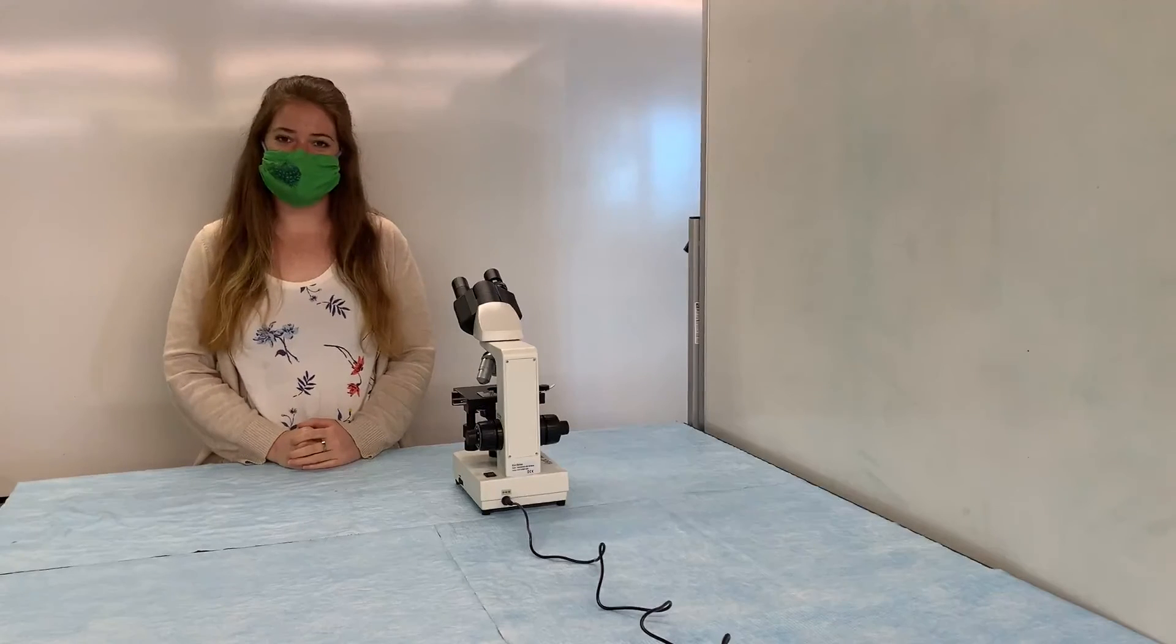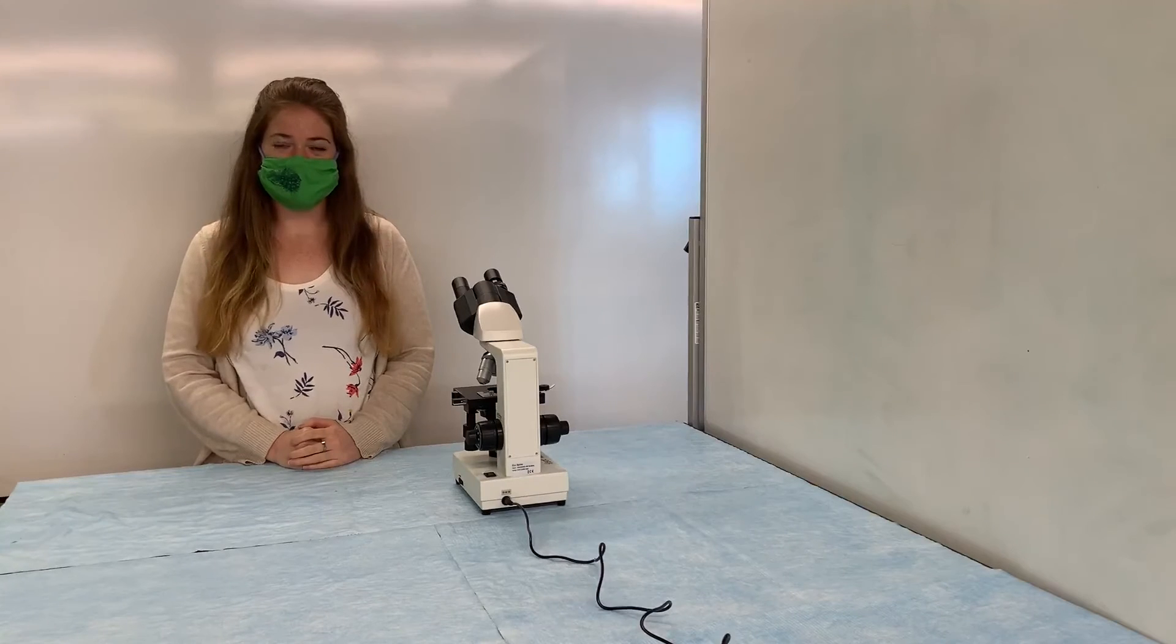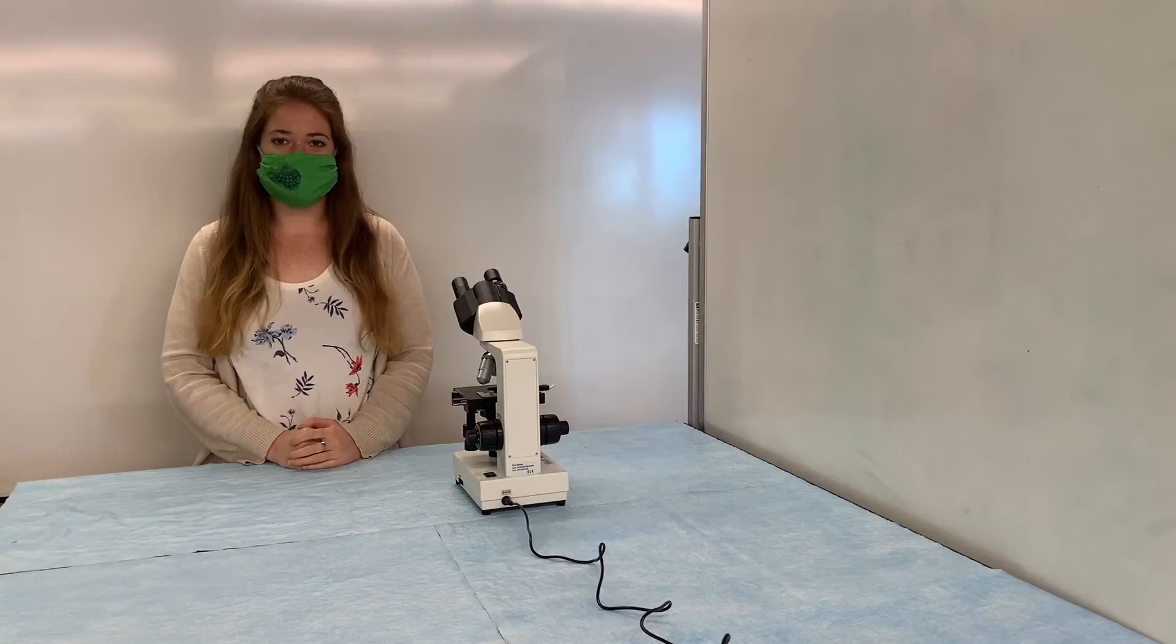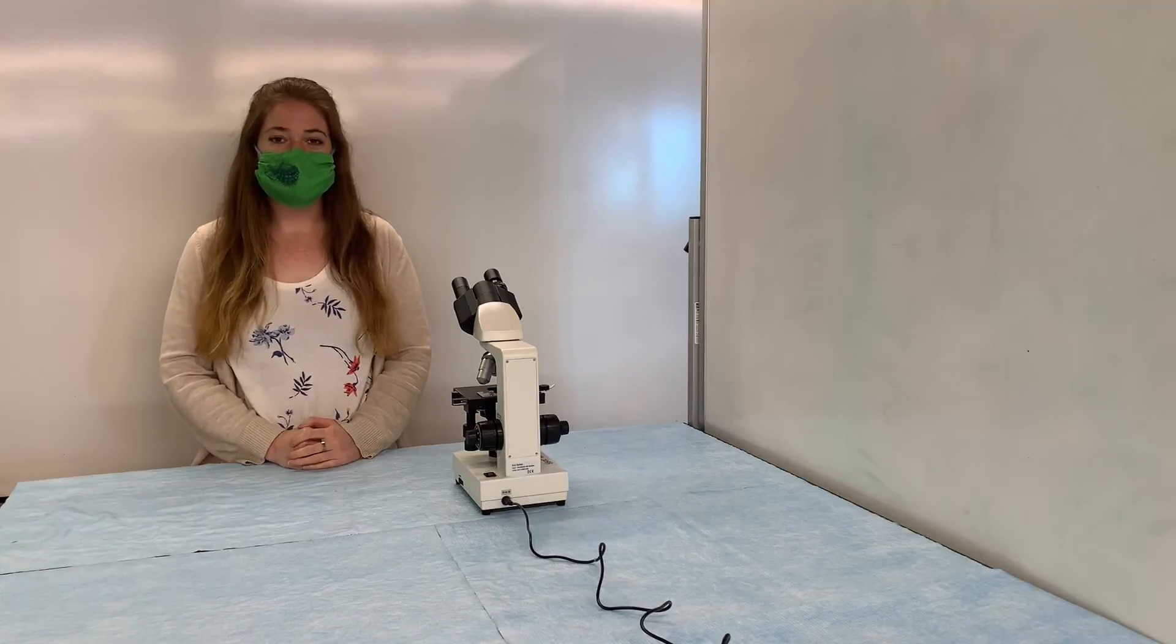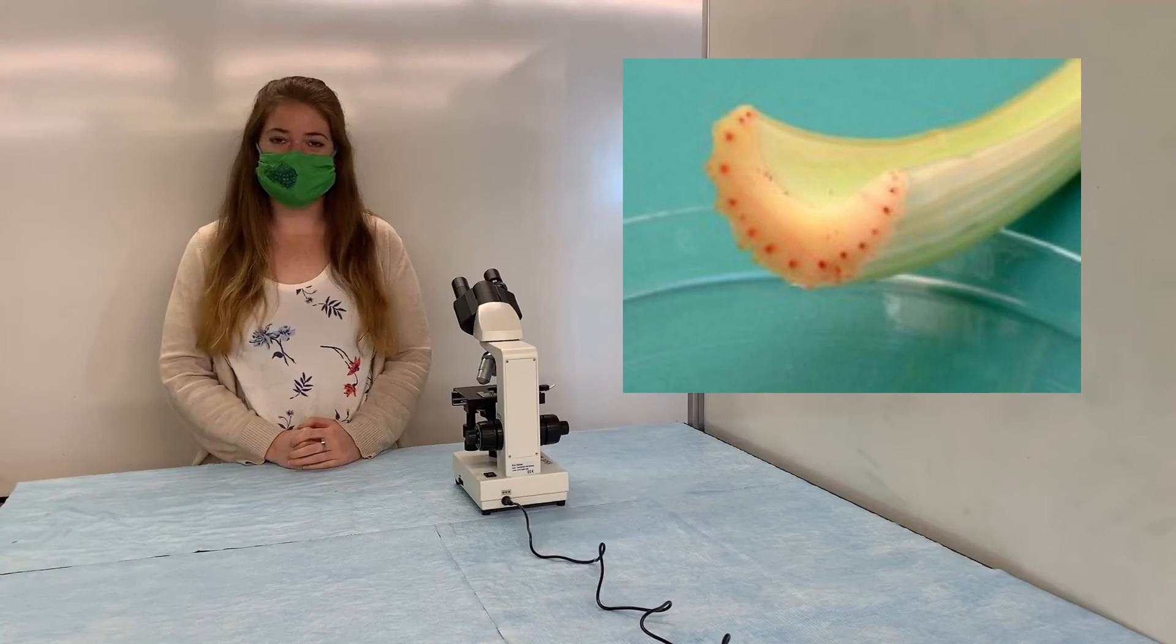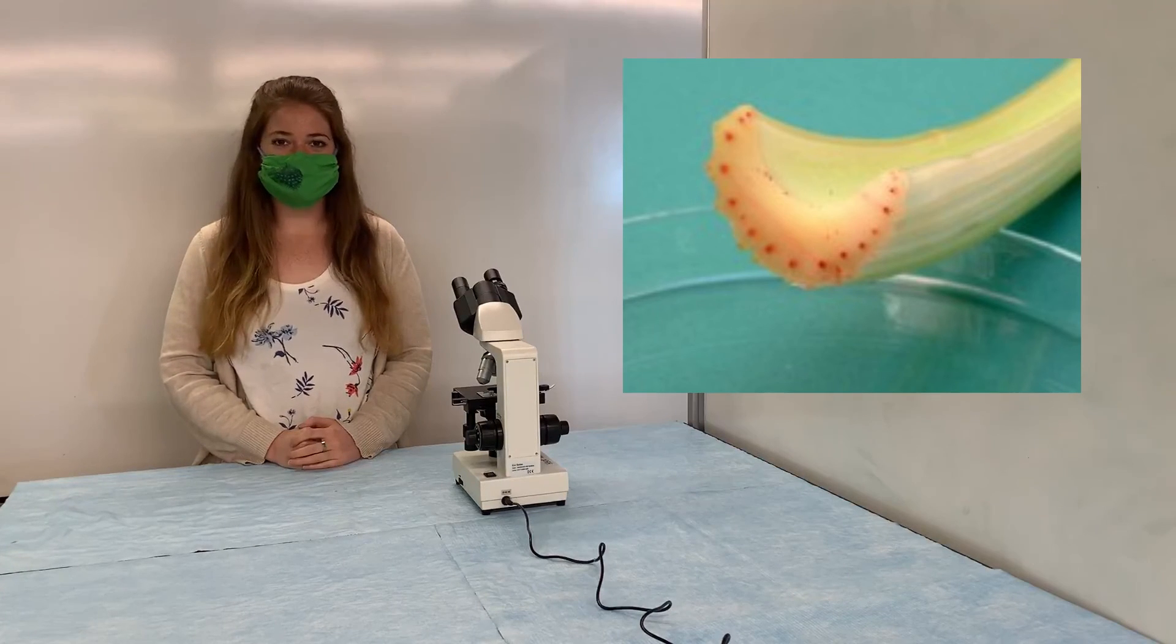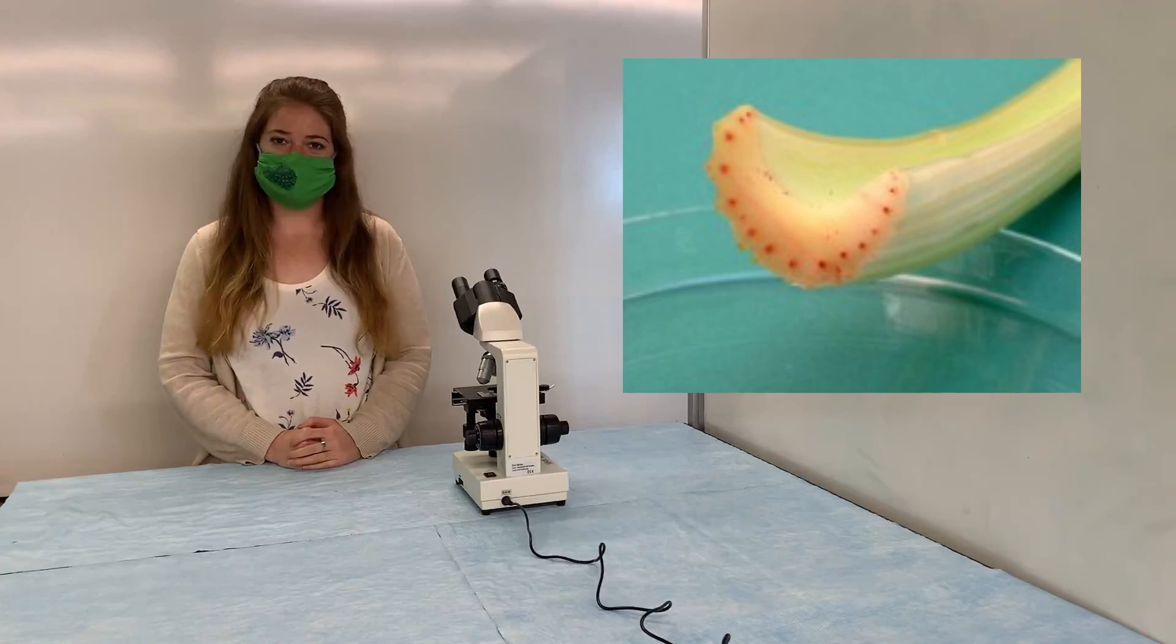Now that we've looked at some cross sections of stems under the microscope, I'm going to show you some celery that has been dyed so we can view its vascular bundles. Based on what you saw under the scope and what you've learned at this station, you're going to decide whether the celery is a monocot or a dicot and record that on your handout.